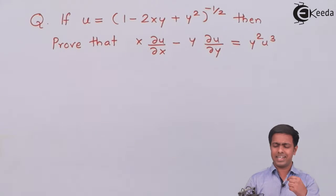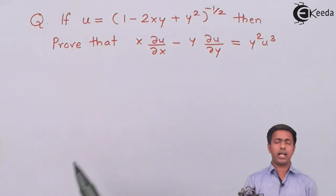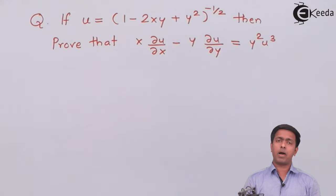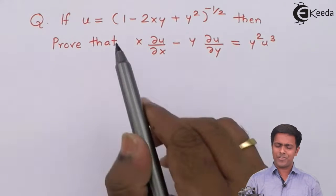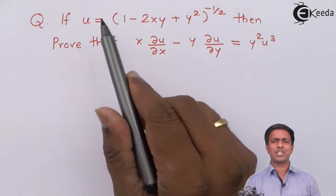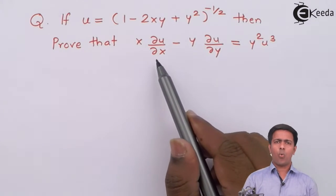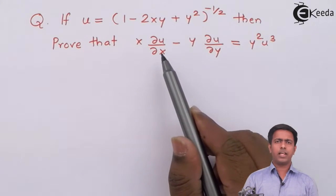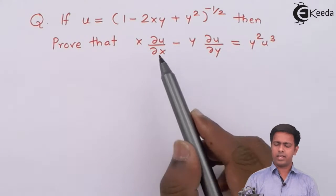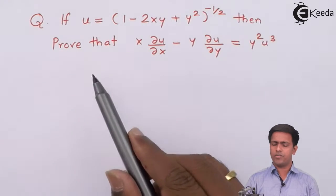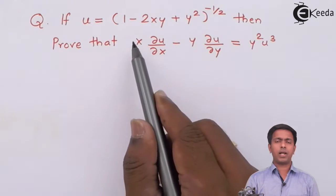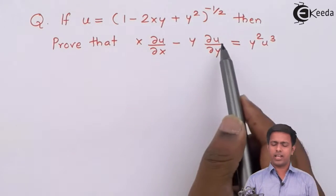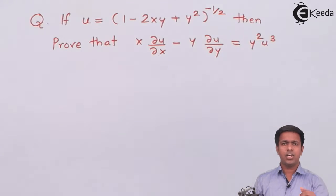∂u/∂x and ∂u/∂y — these two terms denote the partial derivative of first order. What I am going to do is differentiate u with respect to x partially, put that value in, then differentiate u with respect to y partially and put that value in. By multiplying with x and y and subtracting, we will get the answer.